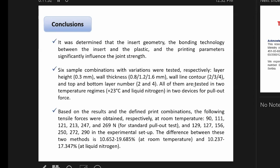Based on the results, we have respective values 90, 111, 151, 250 for standard pull-out test. The difference between these two methods are respectively at room temperature and liquid nitrogen between 10.65 in low value and 10.237 at liquid nitrogen. It means in boundary conditions from 10 to 20% difference between these two methods.